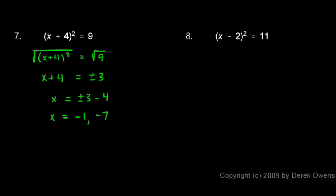And number 8, we'll approach it the same way. We have an expression that is squared, so we can take the square root of each side. And on the left, when we take the square root of x minus 2 squared, we simply get x minus 2.